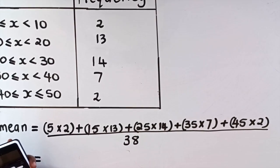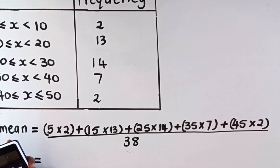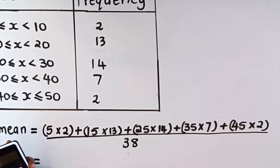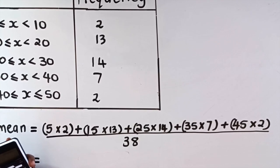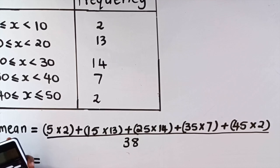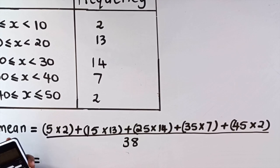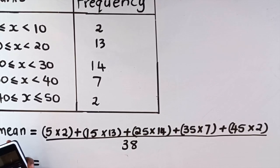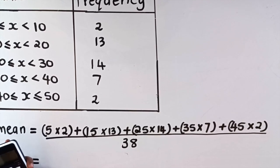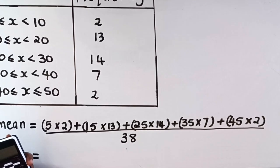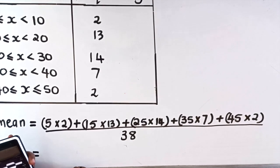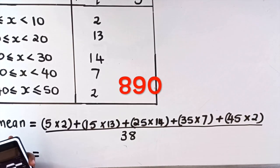Times 13 plus 25 times 14 plus 35 times 7 plus 45 times 2, and then you say equals. It gives me 890. But for safety I'm going to check it again.